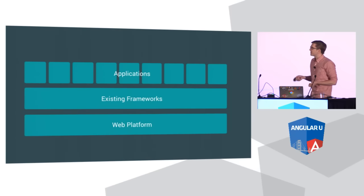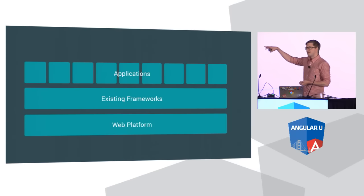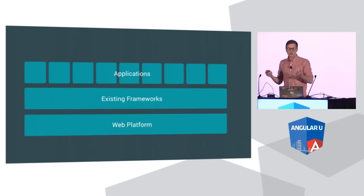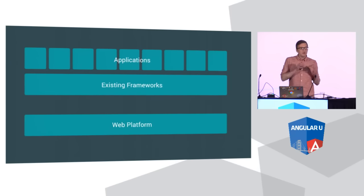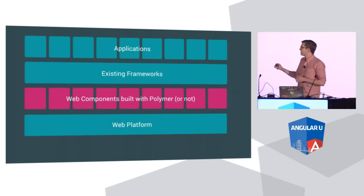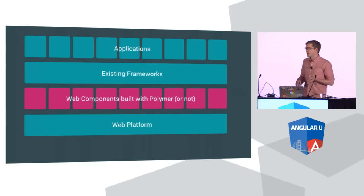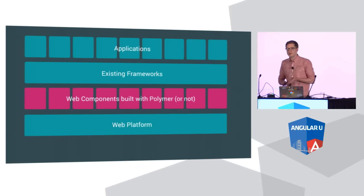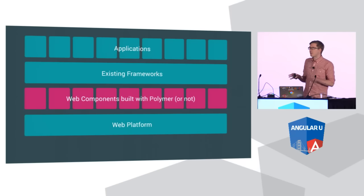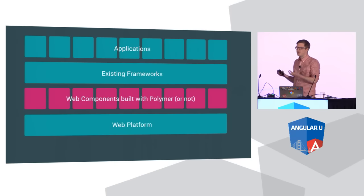One thing we really try to stress is that Polymer is not a framework. The very premise of web components is that they are not a framework. Polymer is not trying to replace another framework. The goal is just to help people build components that they can then use with their framework so it can orchestrate the whole application. Web components could be built with Polymer, with vanilla JavaScript, or with other libraries like Xtags — and because they're interoperable, you can leverage them regardless of the framework you're using.